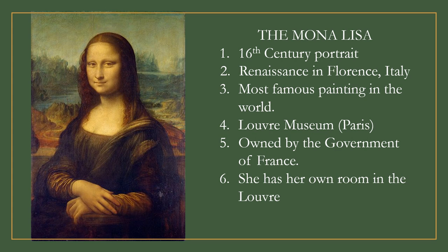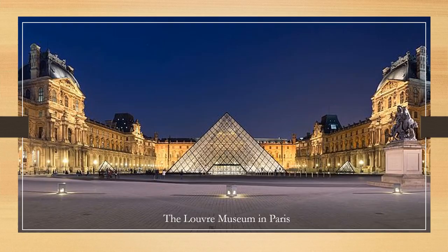Let me introduce you to one of his most famous artworks, the Mona Lisa. It's a 16th century portrait made in the Renaissance era in Florence, Italy. It was considered one of the most famous paintings in the world, and it's currently hanging in the Louvre Museum in Paris. It's owned by the government of France, and she has her own room in the Louvre. The museum displays about 35,000 objects or artworks, and the Mona Lisa is the most famous of them all.